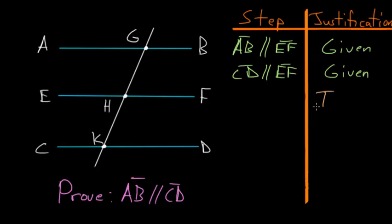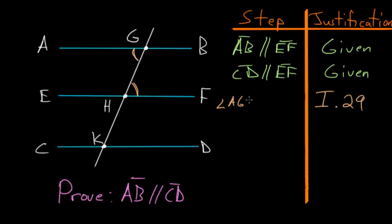To start this proof, we use Book 1, Proposition 29, which says that alternate angles are equal to each other. Since AB and EF are parallel, their alternate angles are equal — so angle AGH is equal to angle GHF.